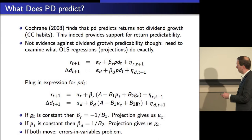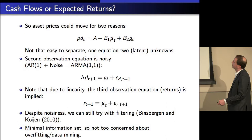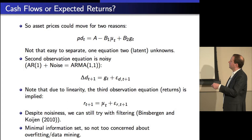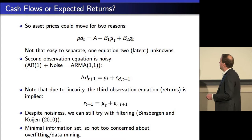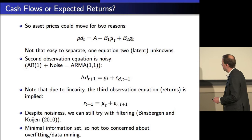So what did we say in our paper? We said: let's deal with that — here's one observation equation, two latent variables. Then add other observation equations. The hard thing about it is that in that observation equation, this is very noisy. AR plus noise is ARMA(1,1), and ARMA(1,1) processes are a pain to estimate. So we can still do the Kalman filter and see what we get — and those were the results that Ricardo showed you earlier.